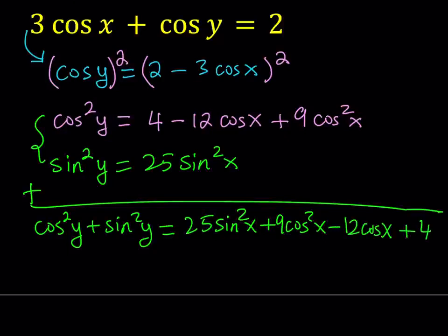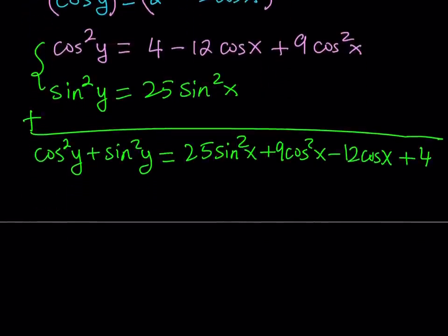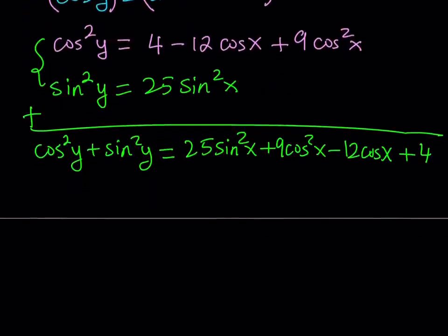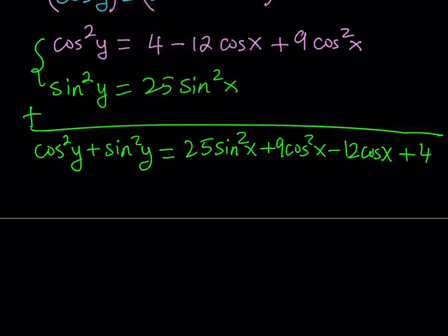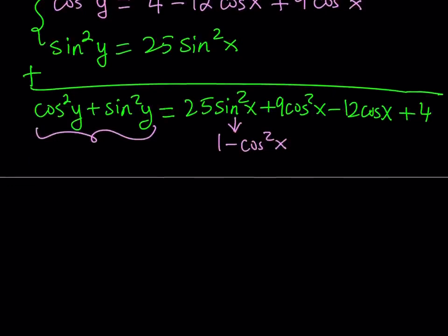Now, the expression on the right-hand side contains two different functions — sine x and cosine x. But notice that sine x is squared, so by using the Pythagorean identity, I can convert sine squared x to cosine squared. We can replace sine squared x with 1 minus cosine squared x. And notice that sine squared y plus cosine squared y is equal to 1 — that's the Pythagorean identity.